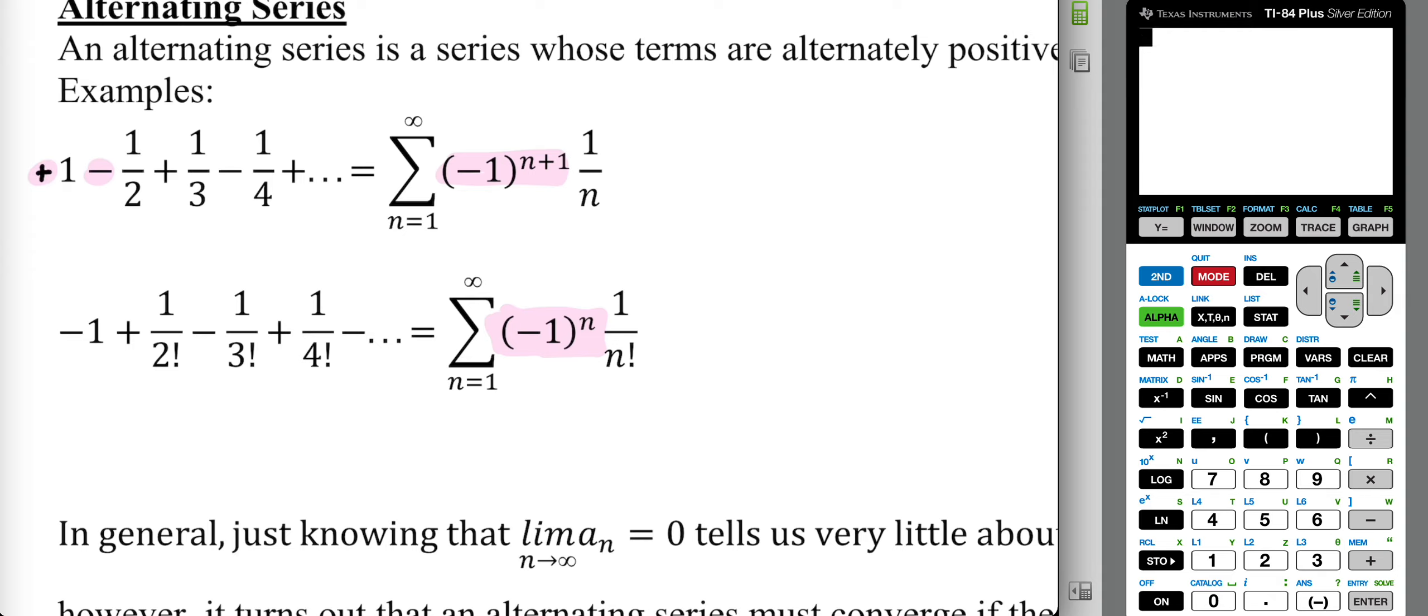That leads us to the second series, negative 1 raised to the nth. If I plug in a 1, I get an odd power. Negative 1 to the first is negative 1. If I plug in a 2, negative 1 to the second, even power, would be a positive 1, giving us a positive, and then it would alternate back and forth that way.